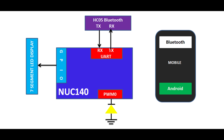Here you can see the NUC has a lot of on-chip peripherals, but in this demo we are going to use the UART module and PWM0 to control the intensity of the LED. The UART module is connected to the HC05 Bluetooth module and PWM is connected to the on-board RGB LED.